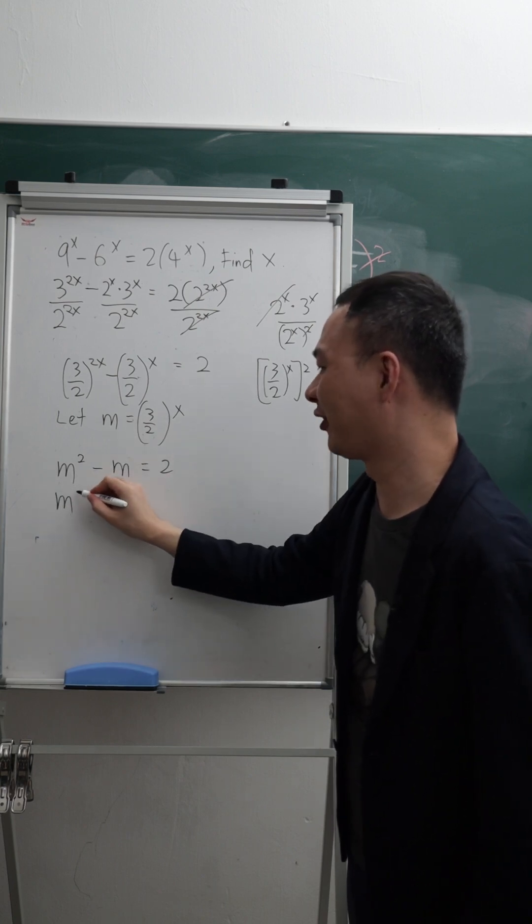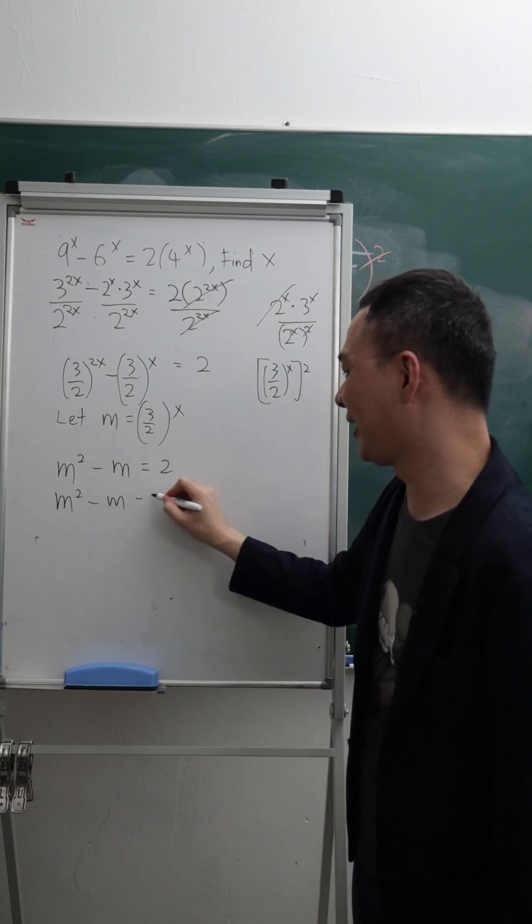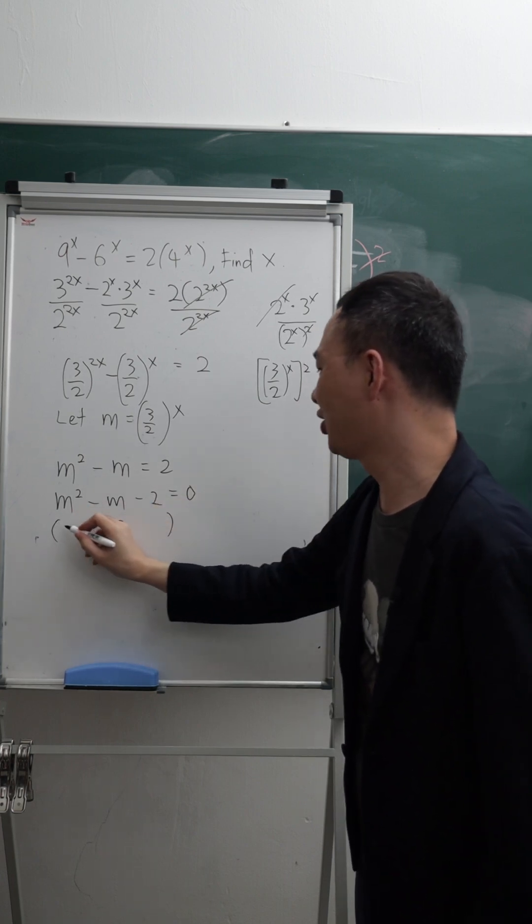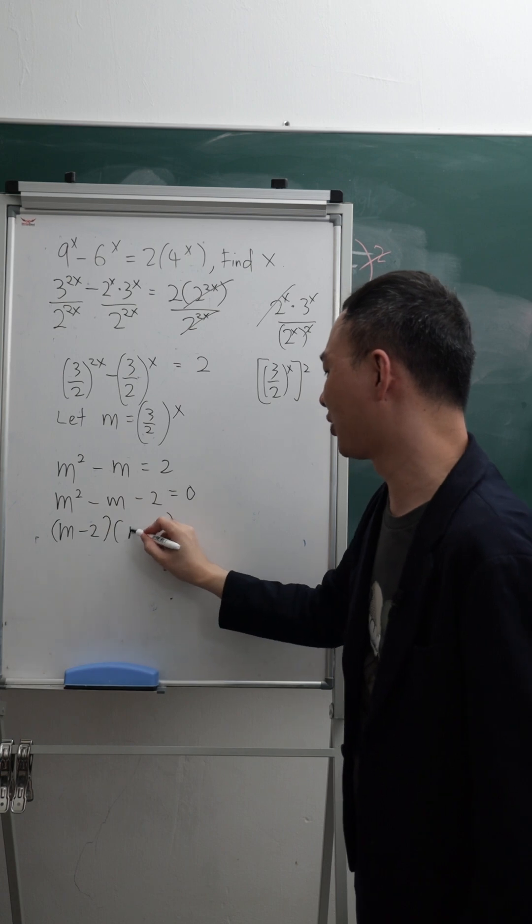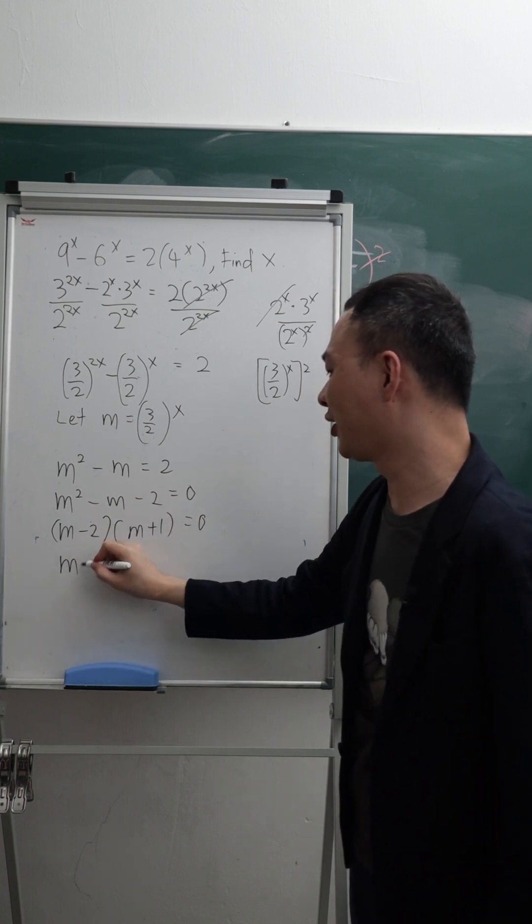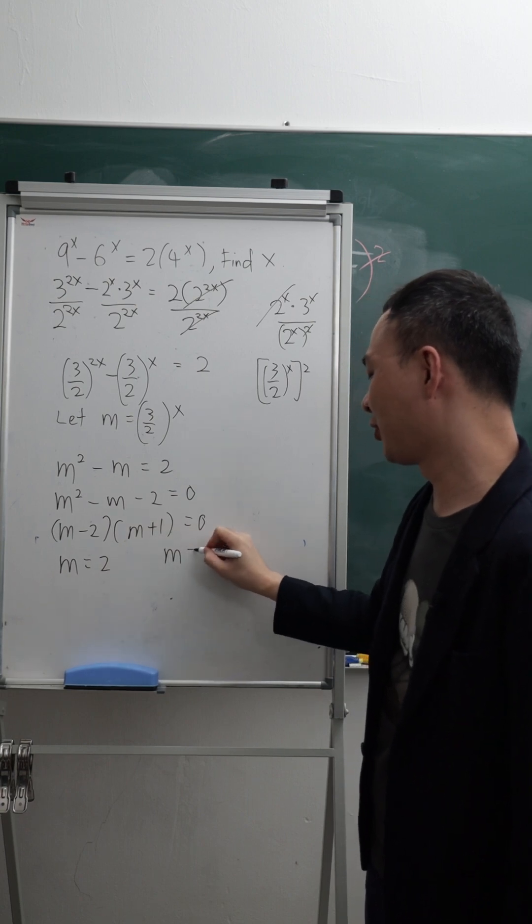Then here we have quadratic m squared minus m minus 2 equals to 0. And then factorize this one, I should get m minus 2, m plus 1 equals to 0. And then this one is m equals to 2 and m equals to negative 1.